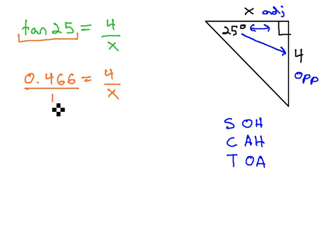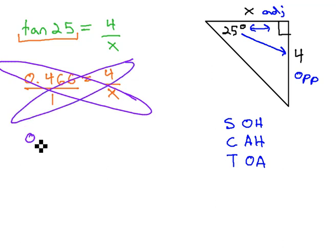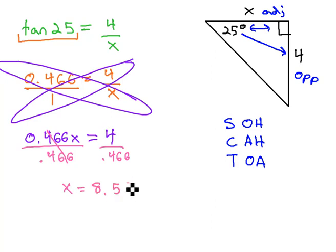And I always like to put the 0.466 over 1 because that gives me a proportion, which we know how to solve. We solve proportions by multiplying the diagonals. We end up with 0.466x is equal to 4 times 1, or 4. And we can quickly solve this by dividing by 0.466 to find out that x is equal to approximately 8.58.